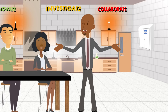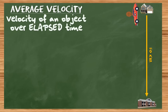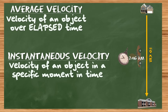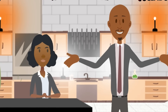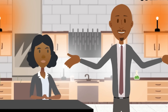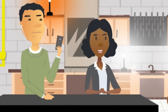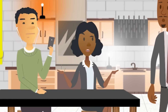Of course, I was not going exactly 33 kilometers per hour south the entire route — that's better known as my average velocity. If we were to analyze how fast I was going at, let's say, 7:46 a.m., that would be my instantaneous velocity. The odometer on a vehicle shows you the instantaneous velocity — how fast the vehicle is going in that moment — but it doesn't show you how fast you were going over the entire journey.